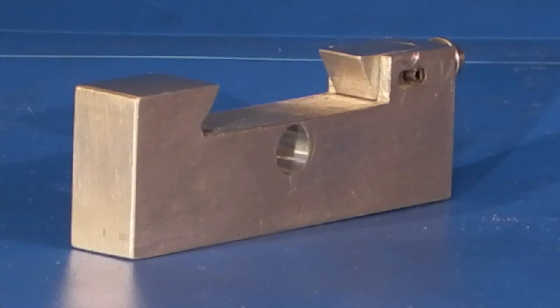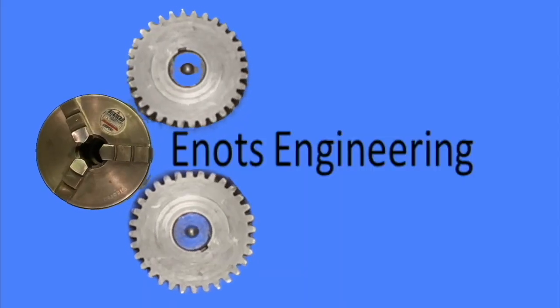Well that's the aluminium block finished. In part two we'll start making the clamping screw and see how it works. Thanks for watching, hope that's useful. See you next time on E-Knots Engineering.